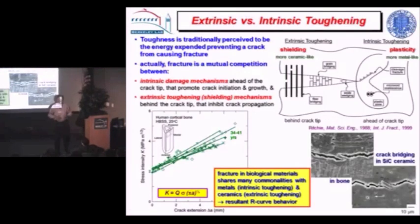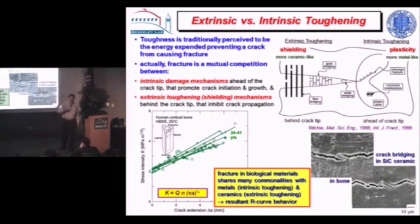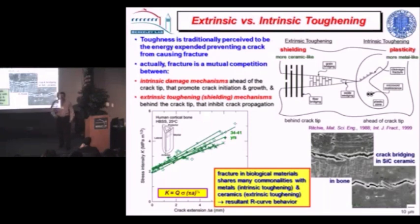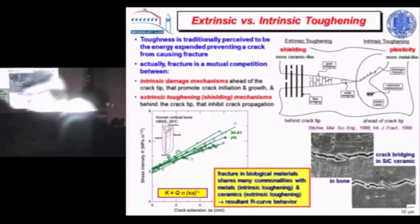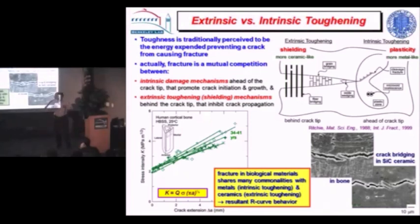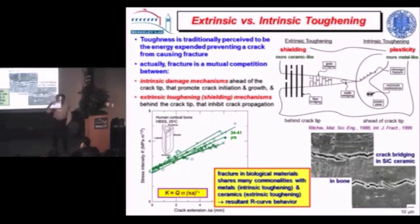What is fracture? Fracture is a competition between mechanisms. If you take a crack and look at what drives it forward, it's damage ahead of the crack — dislocations, breaking particles, voids forming around particles. How do you make a material tougher? You make these processes more difficult. The primary way in metallic materials is intrinsic toughening, where the main factor is plasticity. Plastic deformation alleviates high stresses and is the primary source of intrinsic toughening, virtually all of which occurs ahead of the crack tip — this is ductility.